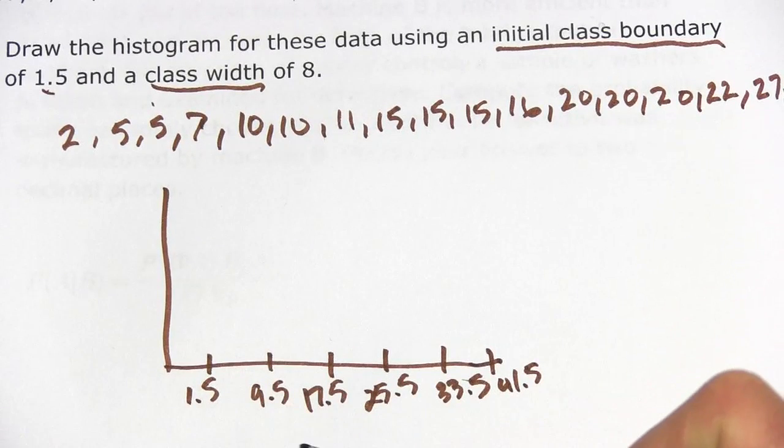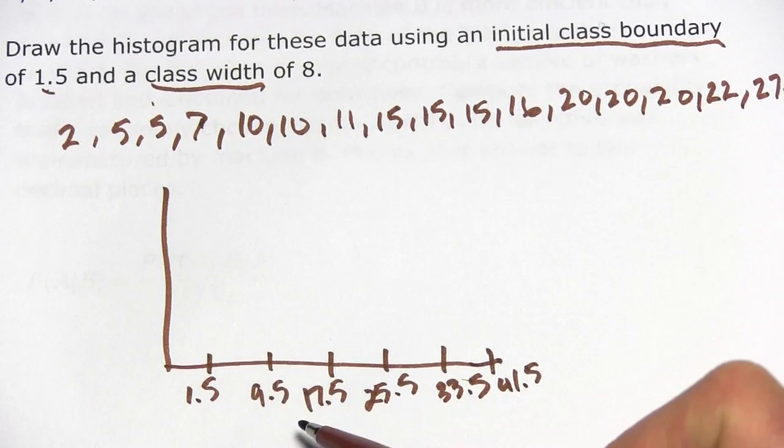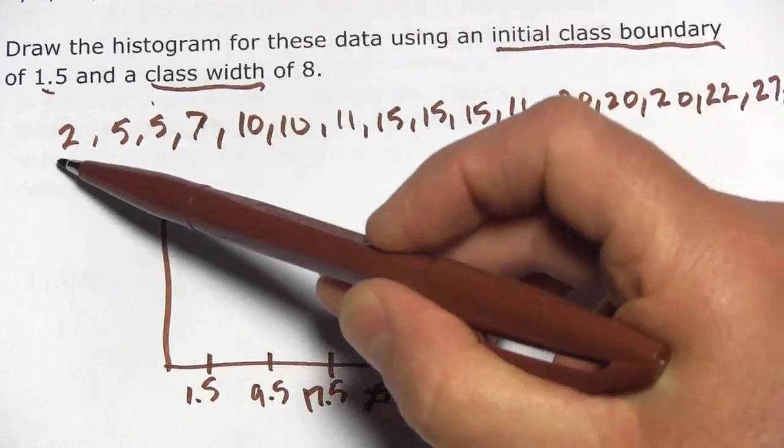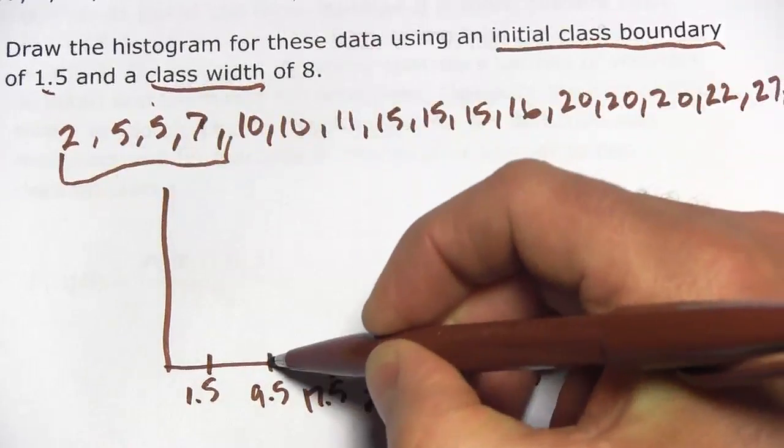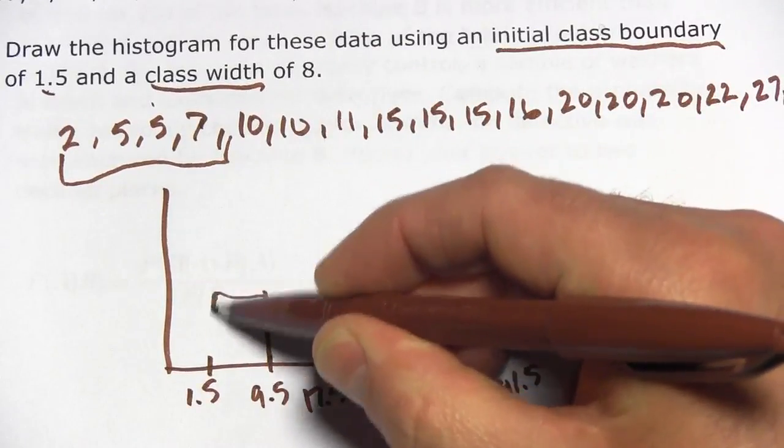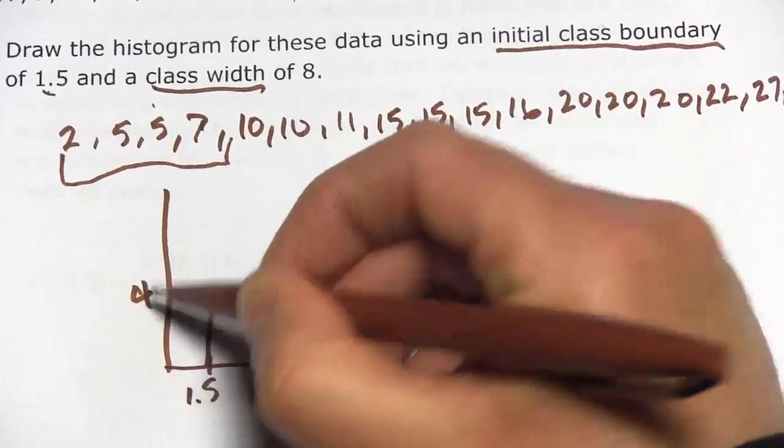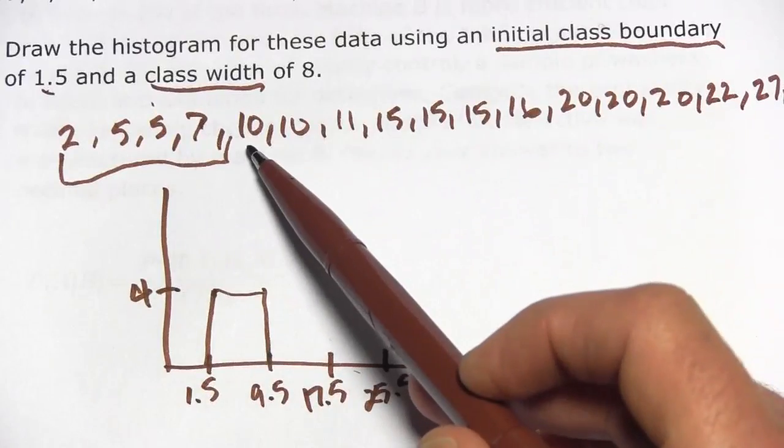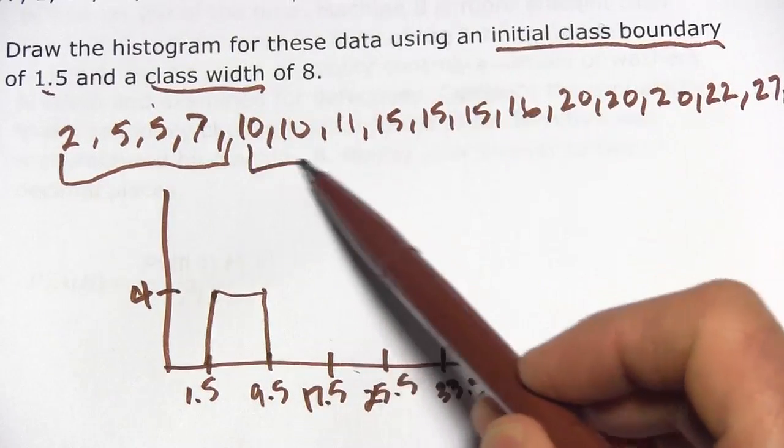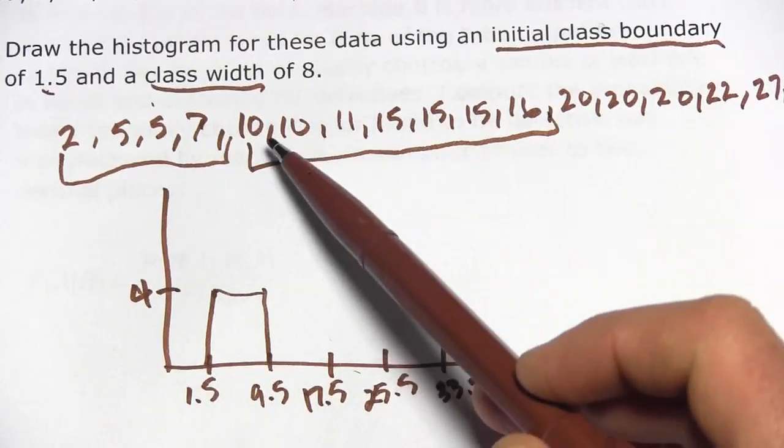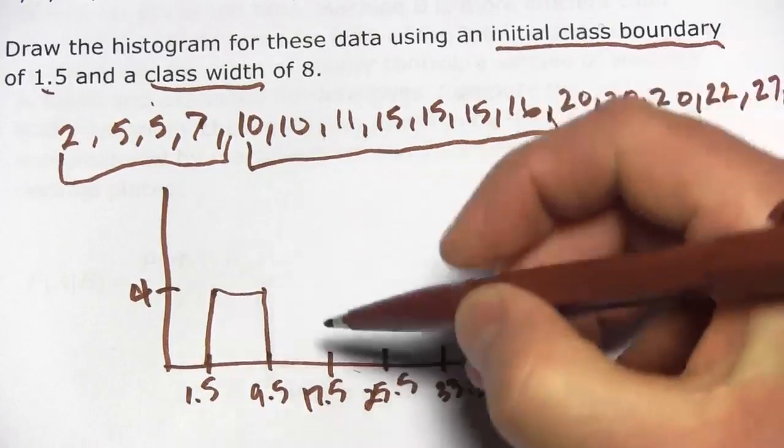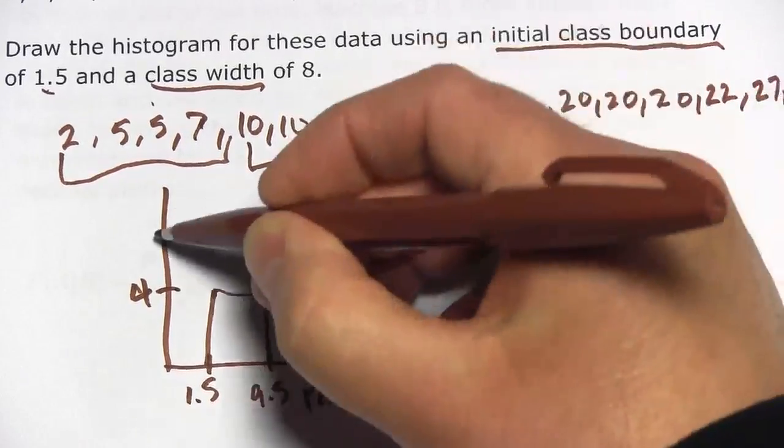Now we need to figure out how many go into each class. So between 1.5 and 9.5, well, that would be these numbers right here. So this bar would be 4 tall. And the next bar we have up to 17.5, so all of those, so that's 1, 2, 3, 4, 5, 6, 7. So that bar is going to go up to 7 here.